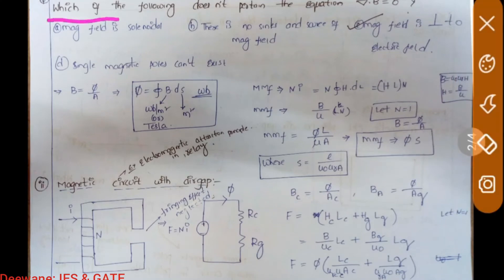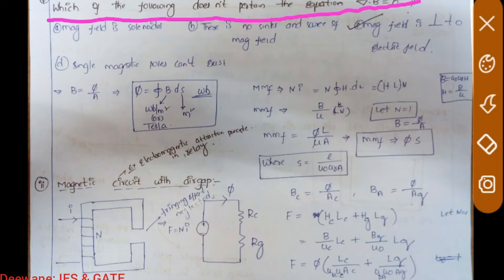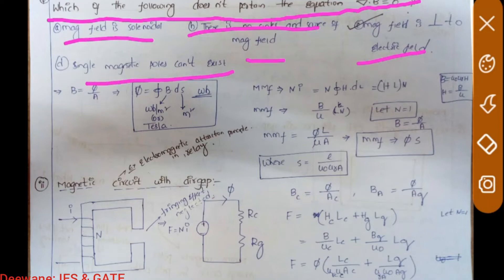The question is: which of the following does NOT pertain to the equation del·B = 0? The options are: magnetic field is solenoidal, there is no sink and source of magnetic field, magnetic field is perpendicular to electric field, and a single magnetic pole does not exist. Since the question asks what does NOT pertain, three options are correct and one is wrong. The answer is option C.